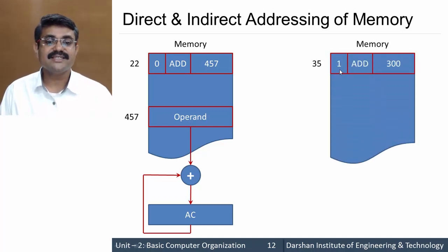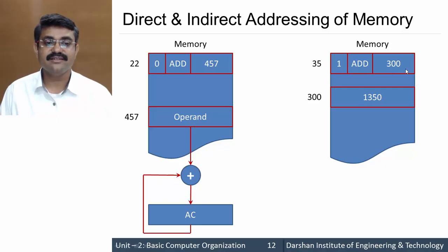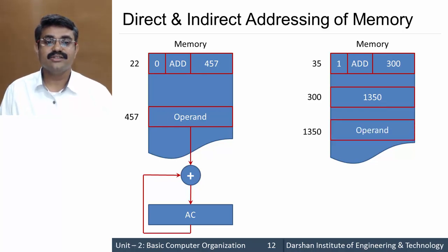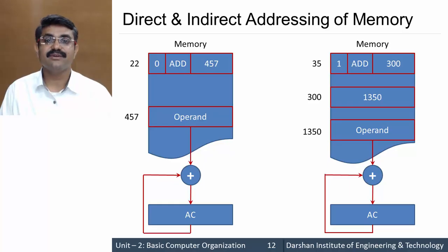In indirect addressing, the I-bit is set to 1. The address field (e.g., 300) does not store the operand directly — instead it stores another address (e.g., 1350), and that address 1350 stores the actual operand. So the actual operand is located at the address stored at location 300. That operand is fetched, added to the accumulator, and the result is stored back to the accumulator.